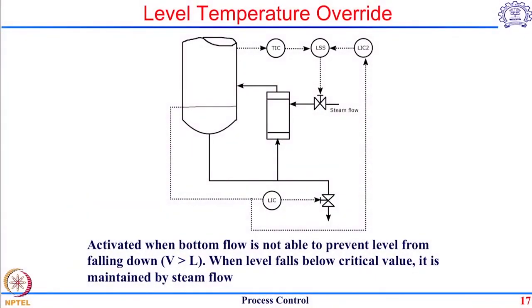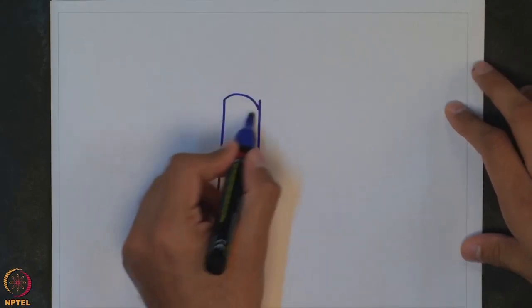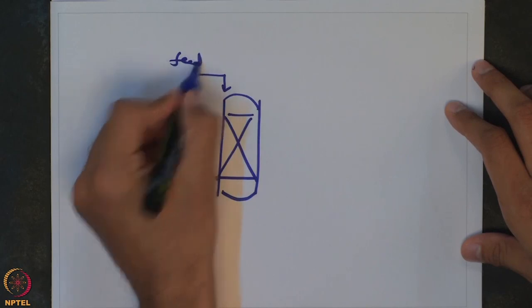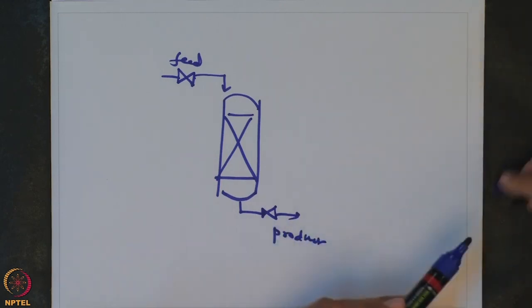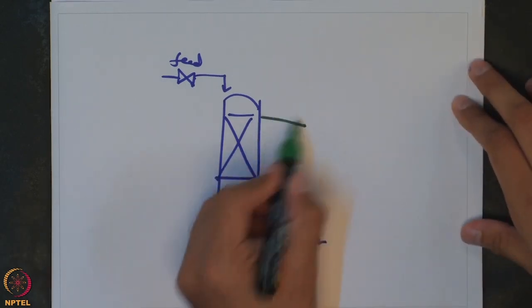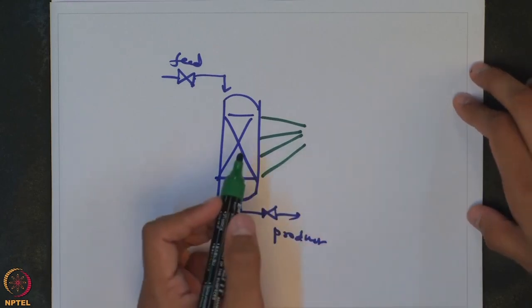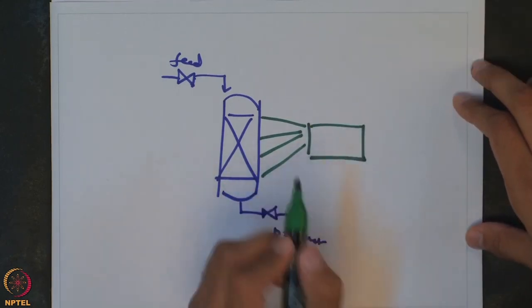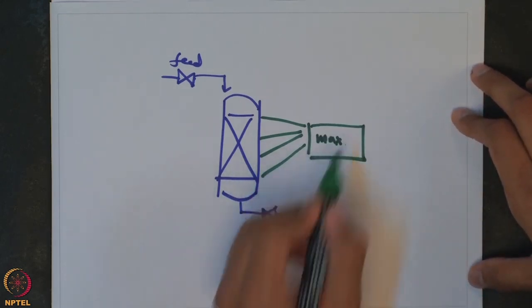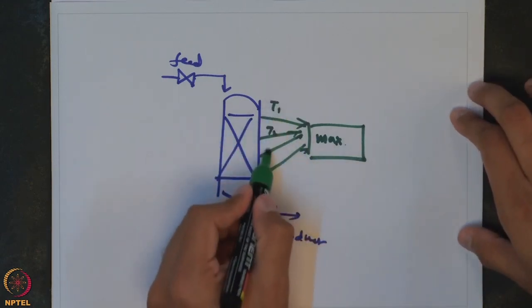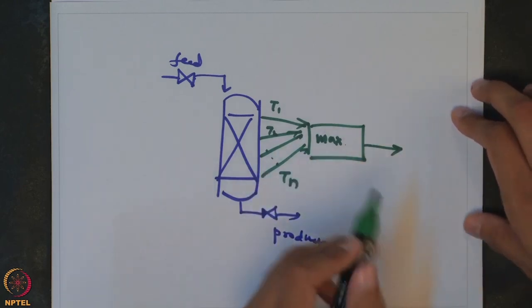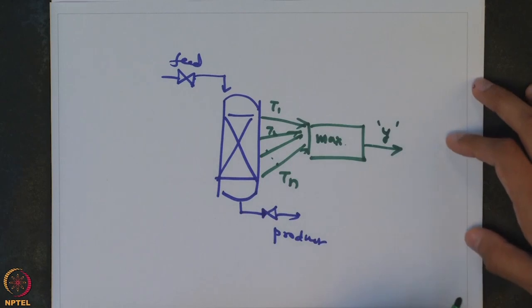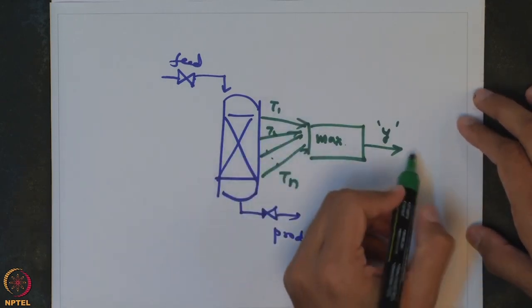If I want to show how this strategy would look: we have our packed bed reactor, a feed, and a product. From this reactor, multiple temperature measurements T1, T2, all the way up to Tn are taken at different locations, different radial distances, and different angles. All these go to an auctioneering control block which finds the maximum out of all these measurements. That maximum gives you an idea about the hot spot, and it is used as the controlled variable. Eventually you will have a control strategy around that, with a set point used to control the feed valve.